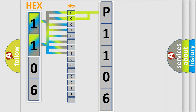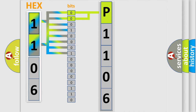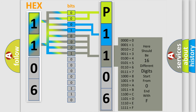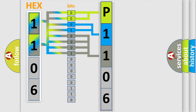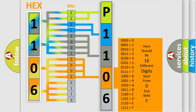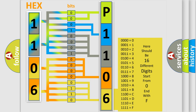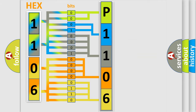By combining the first two bits, the basic character of the error code is expressed. The next two bits determine the second character. The last bits of the first byte define the third character of the code. The second byte is composed of a combination of eight bits — the first four bits determine the fourth character, and the last four bits define the fifth character. A single byte conceals 256 possible combinations. We now know how the diagnostic tool translates the received information into a more comprehensible format.